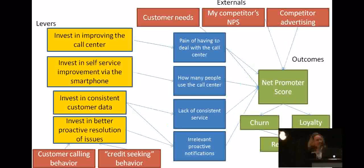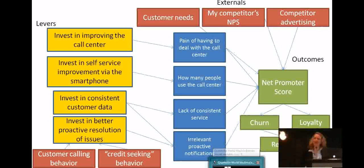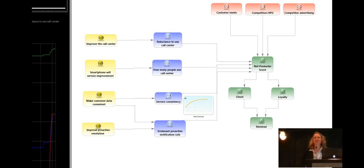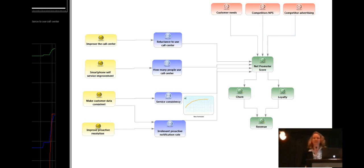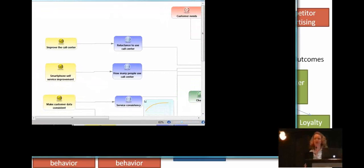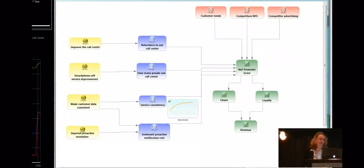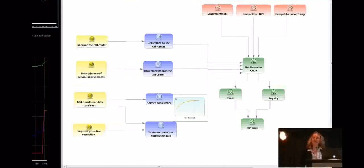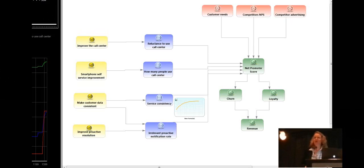And so this is the demo part of the presentation. We'll see if we've got this working. So that's what we did. Over lunch, Mark built this model as a dynamic interactive decision model. So it's not just a mind map. This is now a living model. And so what you saw in that same graph, it's a little hard to read the text here, but again, those same levers, things that I might be able to do, like improving the call center, smartphones, self-service improvement was one of the levers we talked about, making the customer data consistent.